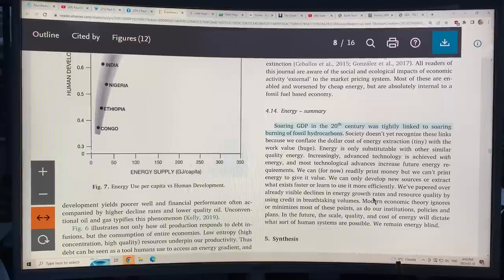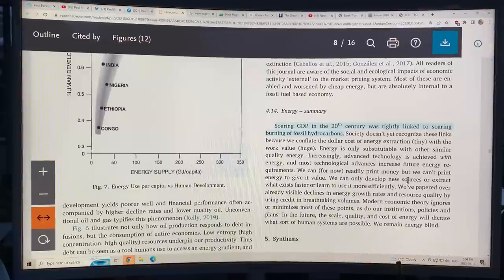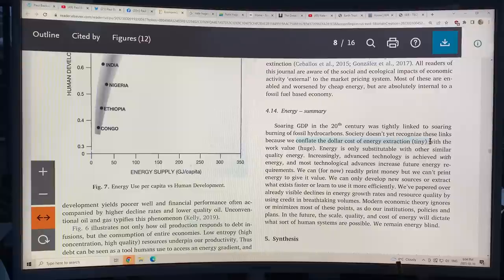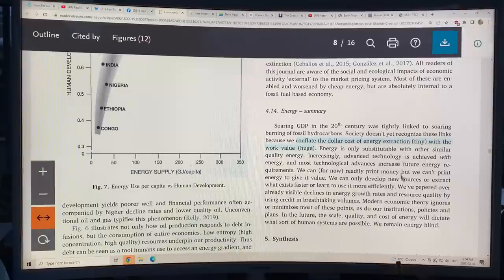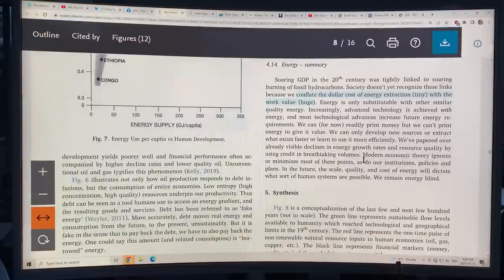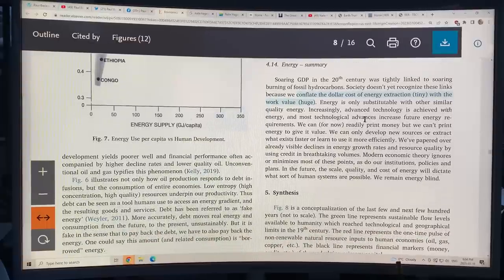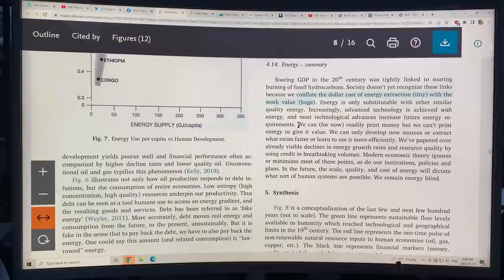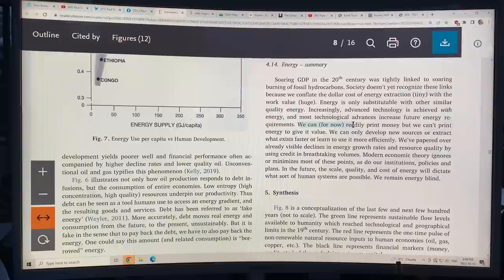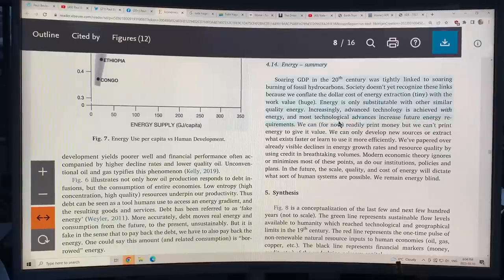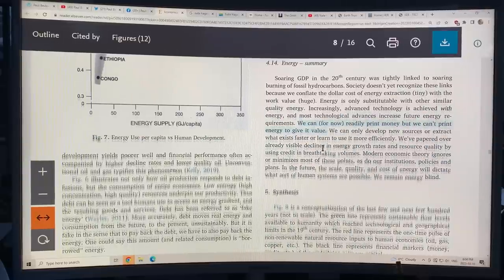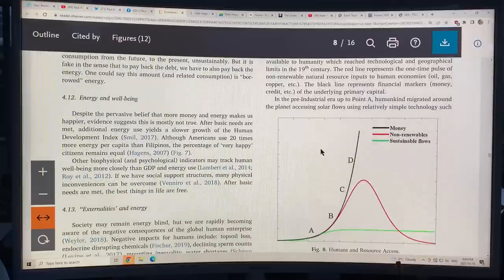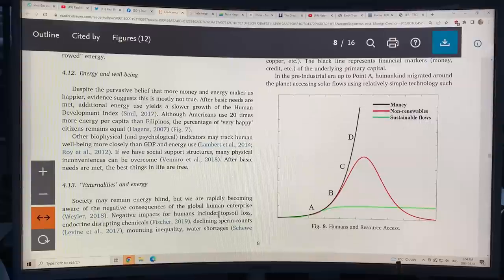And this is the human development index with the energy. So basically, as you increase energy, you get human development index increases, but then it plateaus above a certain point. So soaring GDP is directly linked to soaring burning of fossil hydrocarbons, which is linked to soaring amounts of CO2 in the atmosphere. Society doesn't yet recognize these links because we conflate the dollar cost of energy extraction, tiny with the work value huge. Energy is only substitutable with other similar quality energy. Advanced technology is achieved with energy. Most technological advances increase future energy requirements. Look at crypto, for example, the amount of energy it uses. We can for now readily print money, but we can't print energy to give it value.